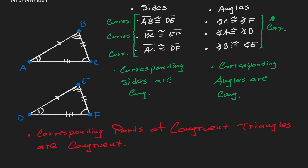If you know that you have two congruent triangles, then you can assume that all corresponding parts — which are sides and angles — are also going to be congruent. There's a small acronym used for this: CPCTC. Corresponding parts of congruent triangles are congruent. The idea is straightforward: two congruent triangles means all corresponding parts are congruent.